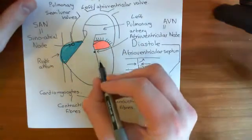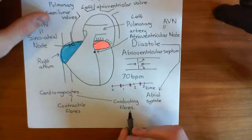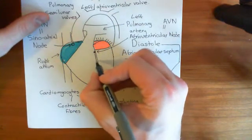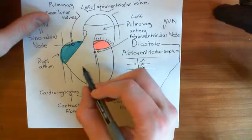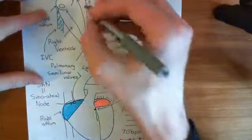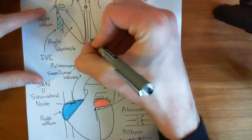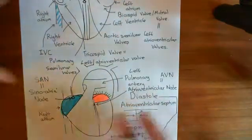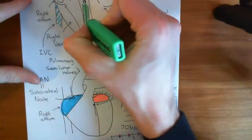You don't want the ventricles to contract at the same instant as the atria. You want the atria to contract and expel all the blood into the ventricles, and then the ventricles contract. The delay is provided by the AV node. Then the signal passes to more conducting cardiomyocytes, which pass the signal along the wall between the right ventricle and the left ventricle.